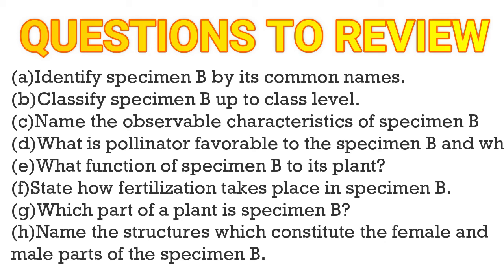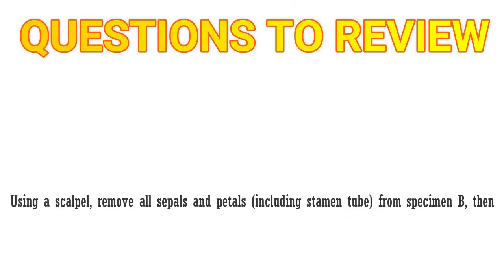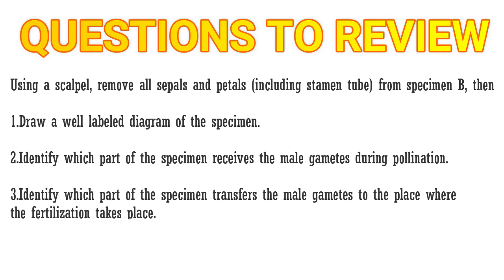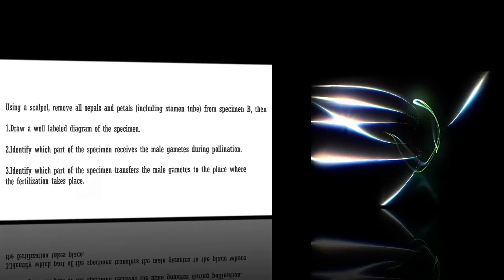Another question for hibiscus flower: using a scalpel, remove all sepals and petals including stamen tube from specimen B. Then draw a well-labeled diagram of the specimen. Identify which part of the specimen receives the male gametes during pollination. Identify which part of the specimen transfers the male gametes to the place where fertilization takes place.